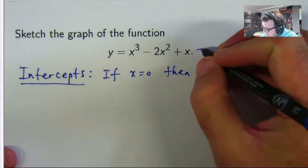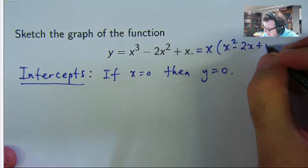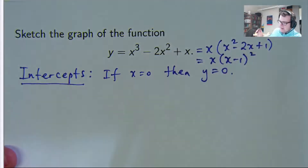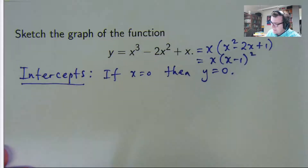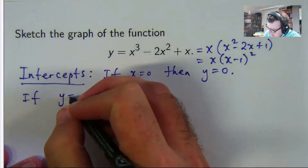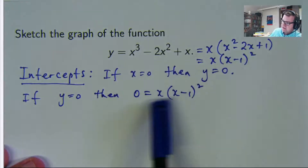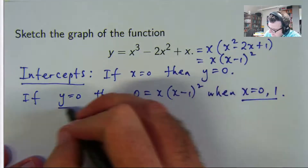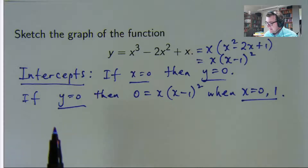We can also simplify this a little bit more by taking out a common factor of x and then realising that this is actually a perfect square. To get the other intercept, you set y equal to 0 and you see that y is 0 when x is 0 or when x equals positive 1. So the intercepts are at (0, 0) and at (1, 0).